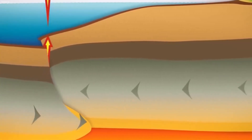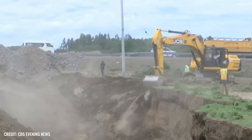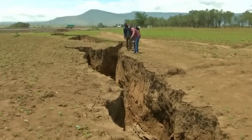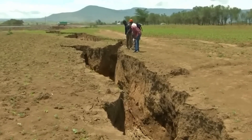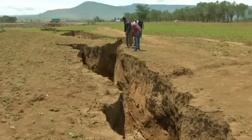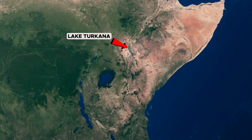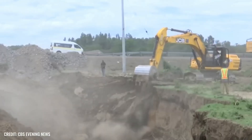Seismic activity is another hallmark of the rift. Earthquakes occur as the crust adjusts to the stresses imposed by tectonic forces. While most earthquakes in the region are relatively small, they serve as reminders of the rift's tectonic dynamism. Occasionally, larger seismic events occur, causing damage to infrastructure and posing risks to human settlements.